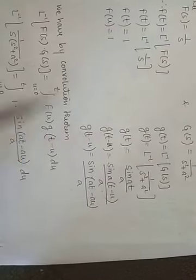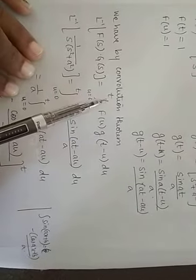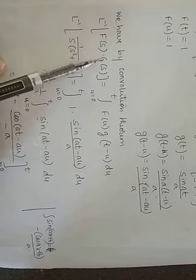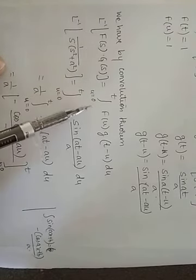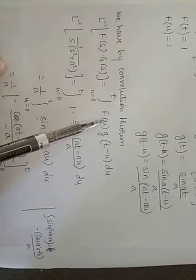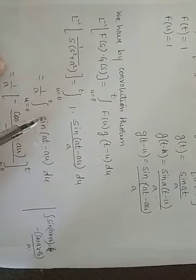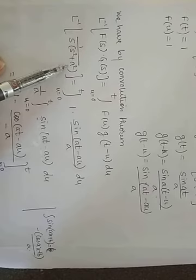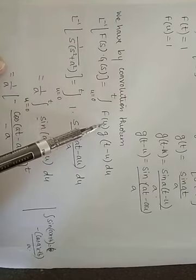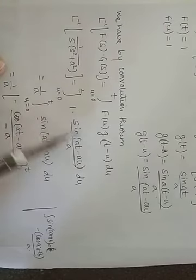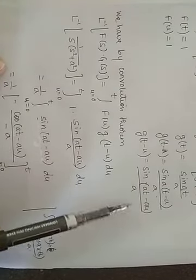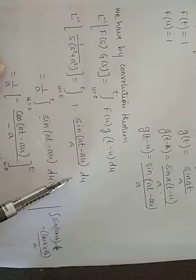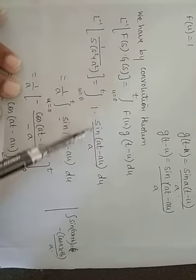Now applying the convolution theorem: L⁻¹ of F(s)·G(s) = integral from u = 0 to t of f(u)·g(t − u) du. Here f(s) = 1/s and g(s) = 1/(s² + a²). Substituting f(u) = 1 and g(t − u) = sin(at − au)/a, the integral becomes the integral from 0 to t of sin(at − au)/a du, where t and a act as constants.